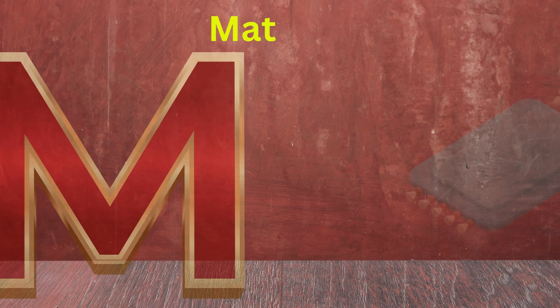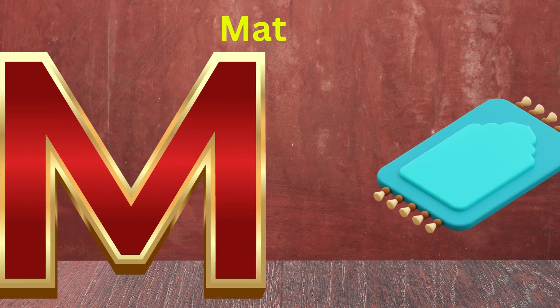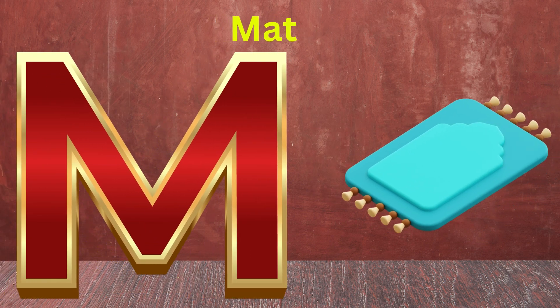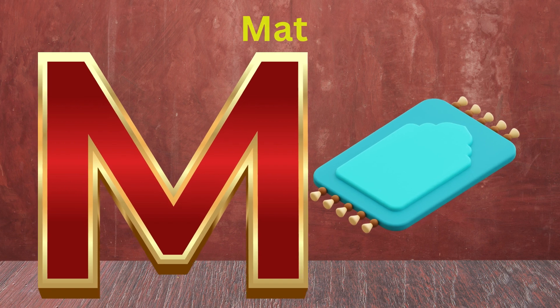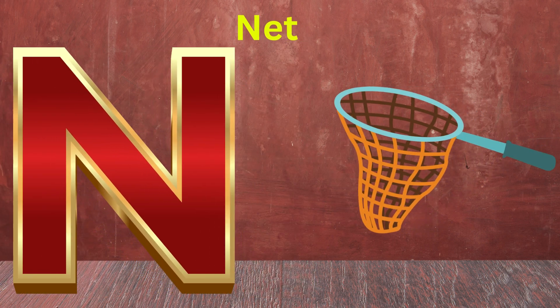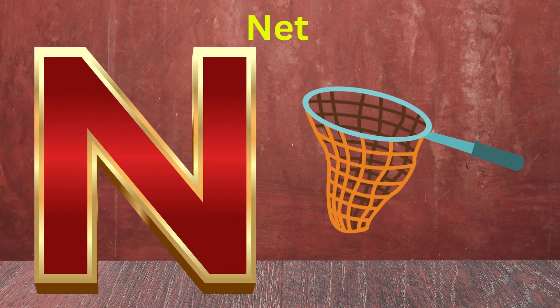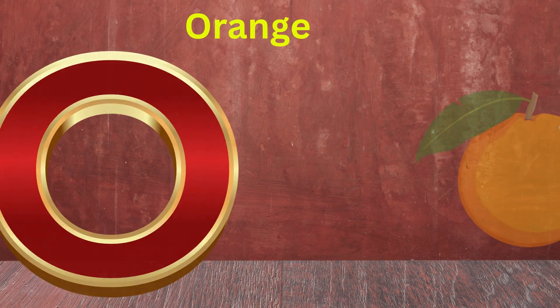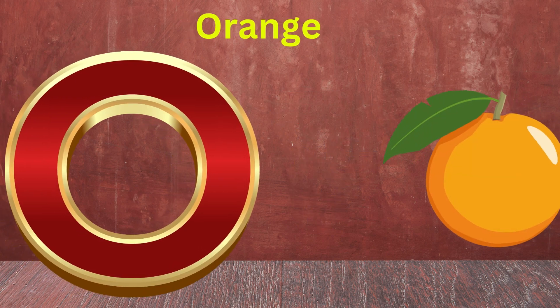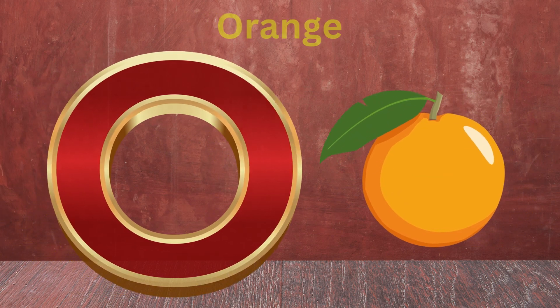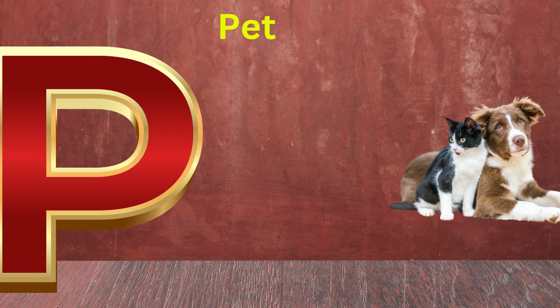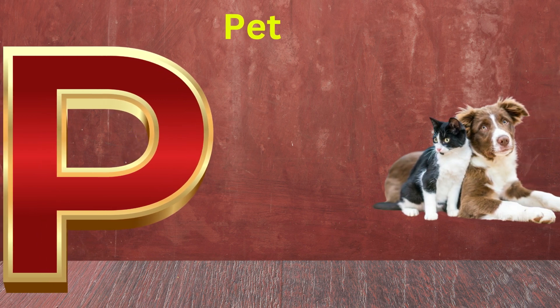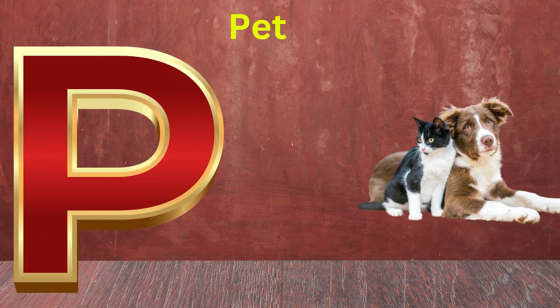M is for Monkey, M-M-Monkey. N is for Net, N-N-Net. O is for Octopus, O-O-Octopus. P is for Parrot, P-P-Parrot.